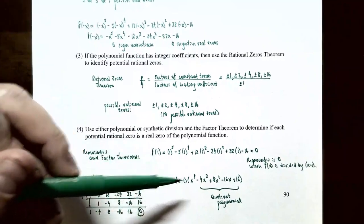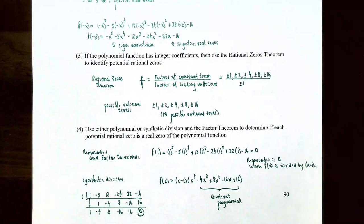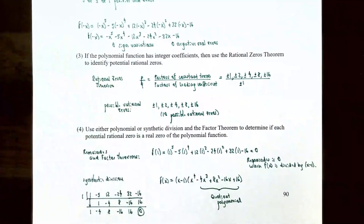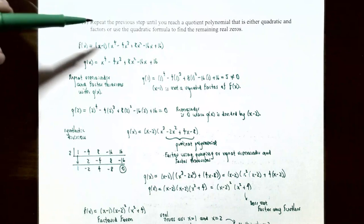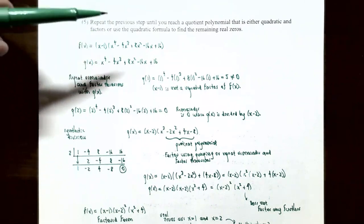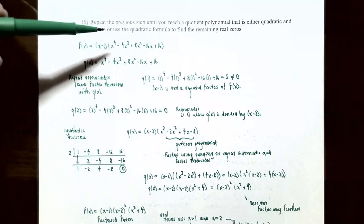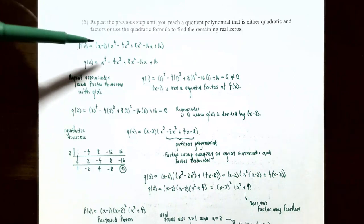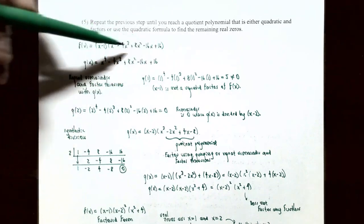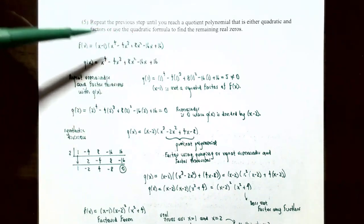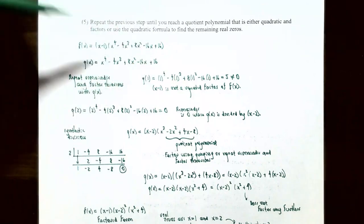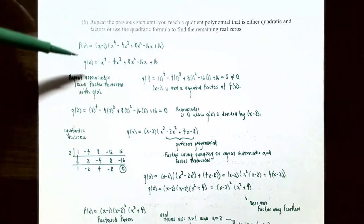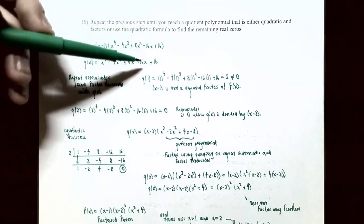The quotient polynomial after dividing by x minus 1 is x to the 4th minus 4x cubed plus 8x squared minus 16x plus 16. So f of x factors as x minus 1 times this quotient polynomial. We know x equals 1 is a real zero. Now we continue factoring the quotient polynomial, which we'll call q of x.